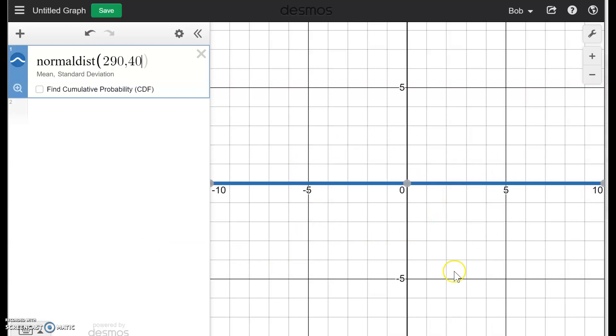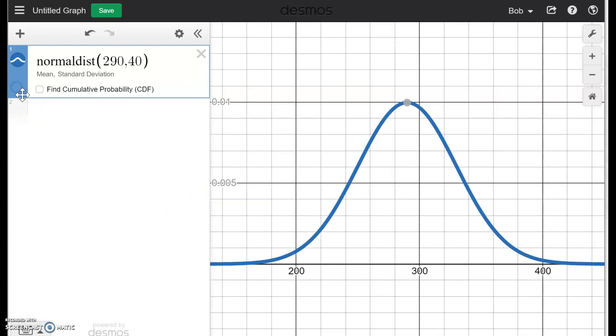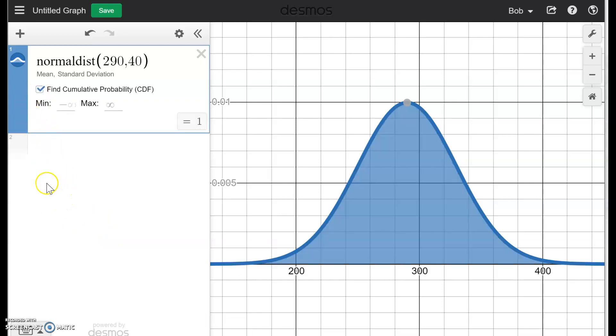Notice that the normal curve does not appear on the screen here. But if I use the Zoom Fit button here, suddenly I have a nice curve which represents the situation. And if I want to find probabilities, I'll click the Find Cumulative Probability button. And I can really find any probability I like.